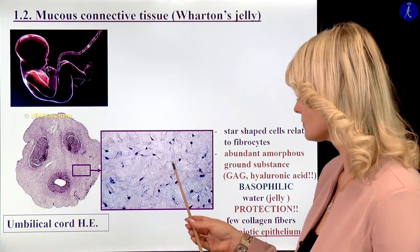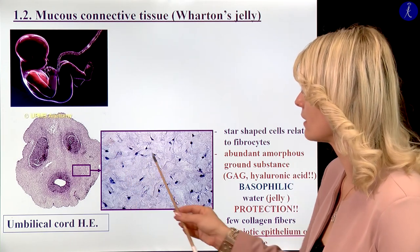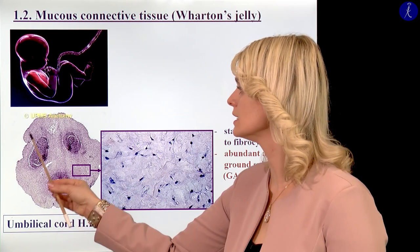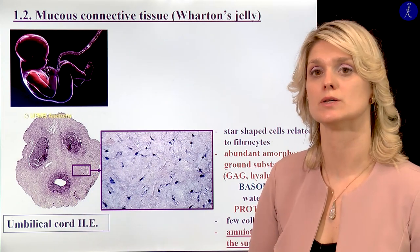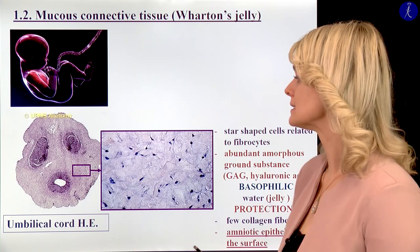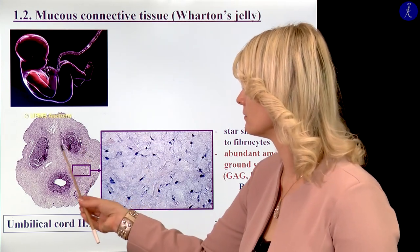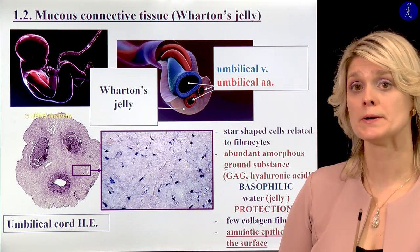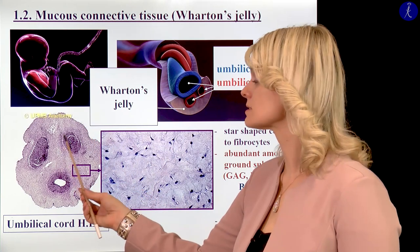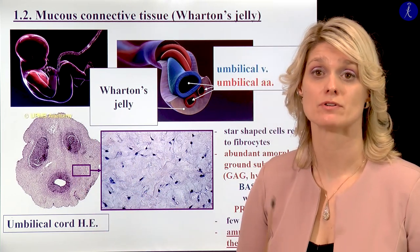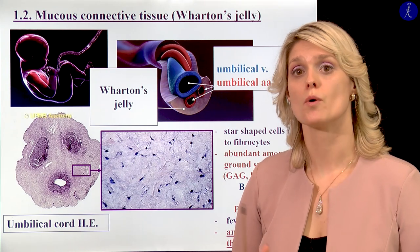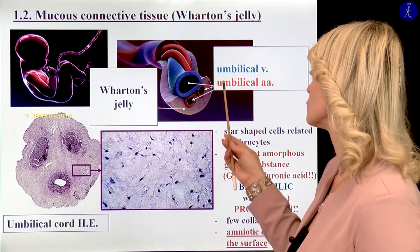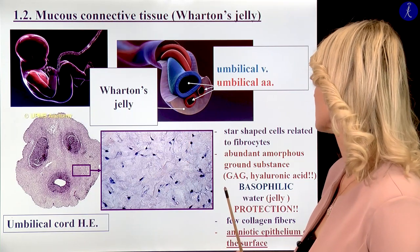It is also important here that we have an amniotic epithelium which will surround the umbilical cord. If you see the cross-section of the vessels within the umbilical cord, the arteries and the veins have a thicker smooth muscle wall compared to other middle-sized vessels in other parts of the body. This is also very important in the protection against compression.